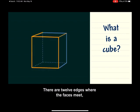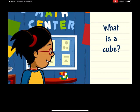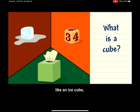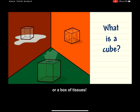There are 12 edges where the faces meet, and there are eight vertices or corners. Plenty of things are shaped like cubes, like an ice cube, a number cube, or a box of tissues.